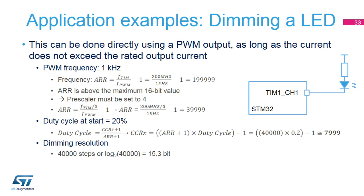This slide shows a simple practical example of PWM usage for dimming a low power LED. This can be done directly using a PWM output as long as the current does not exceed the rated output current. The first step is to program the frequency to be set to 1 kHz.